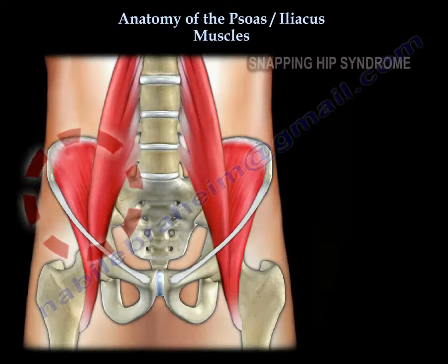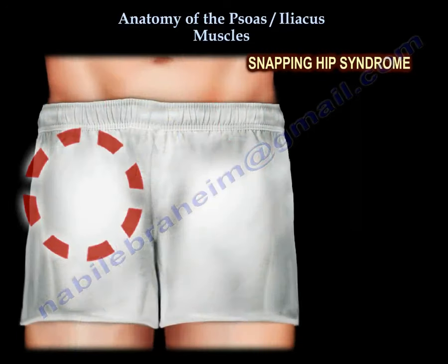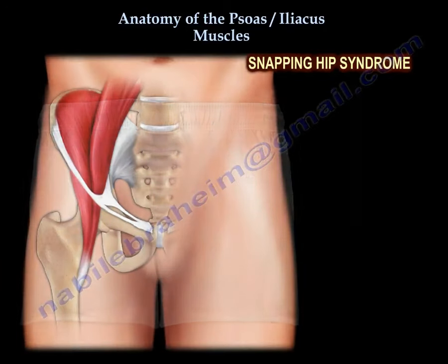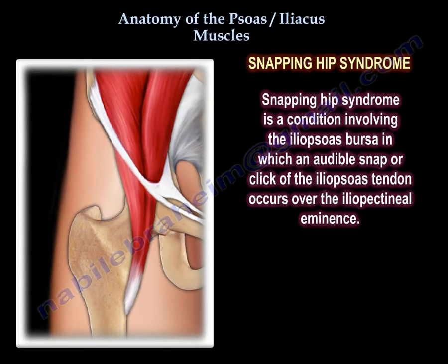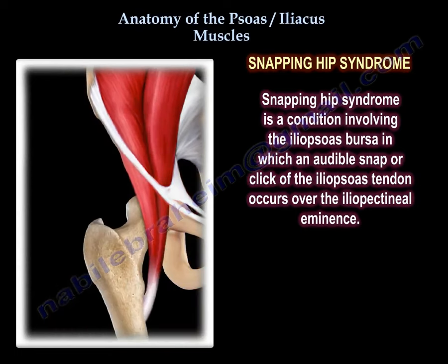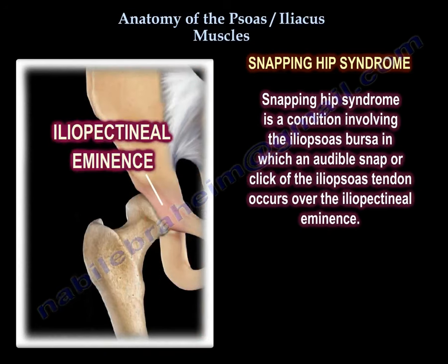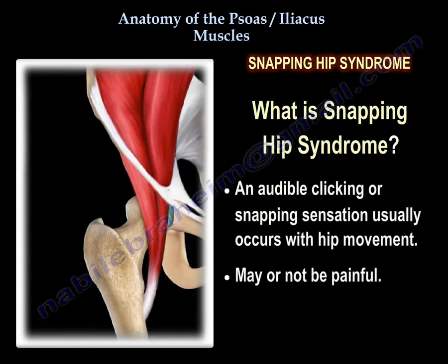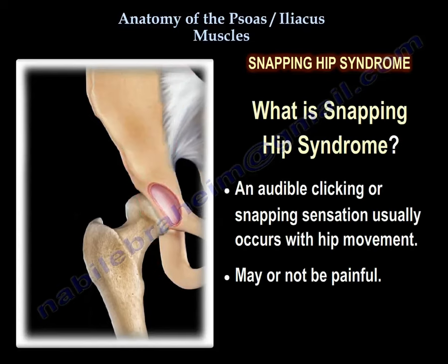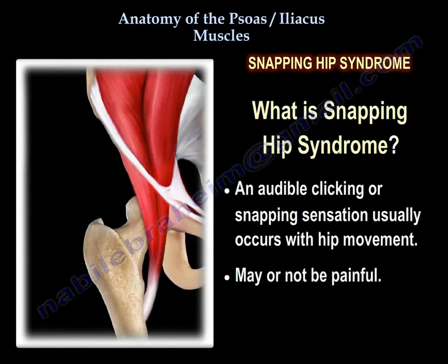The iliopsoas muscle is also involved in snapping hip syndrome, a condition involving the iliopsoas bursa in which an audible snap or click of the iliopsoas tendon occurs over the iliopectineal eminence. That audible click or snapping sensation usually occurs with hip movement and may or may not be painful.